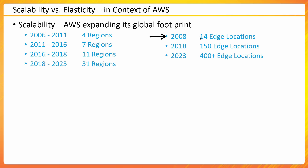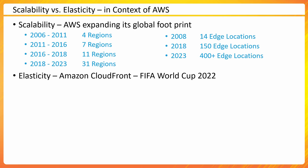Similarly, looking at another aspect of AWS's global footprint — edge locations. In 2008 there were around 14 edge locations, in 2018 there were 150, and now in 2023 there are 400 plus edge locations. This is a strategic investment AWS is making to deliver services near to customers, giving them the performance and availability needed for global scale applications. That is scalability.